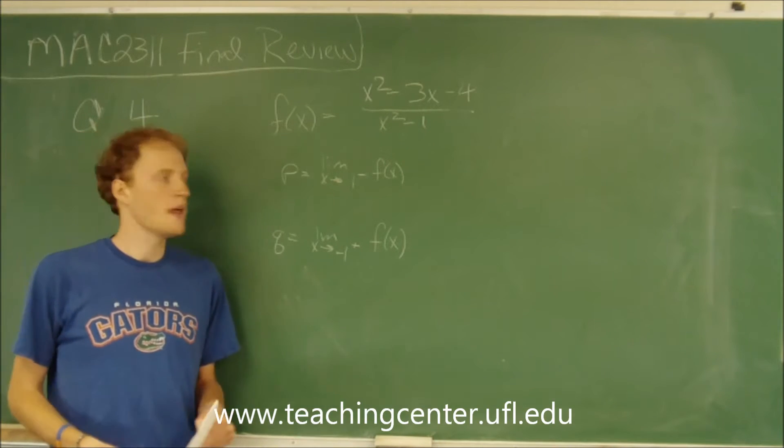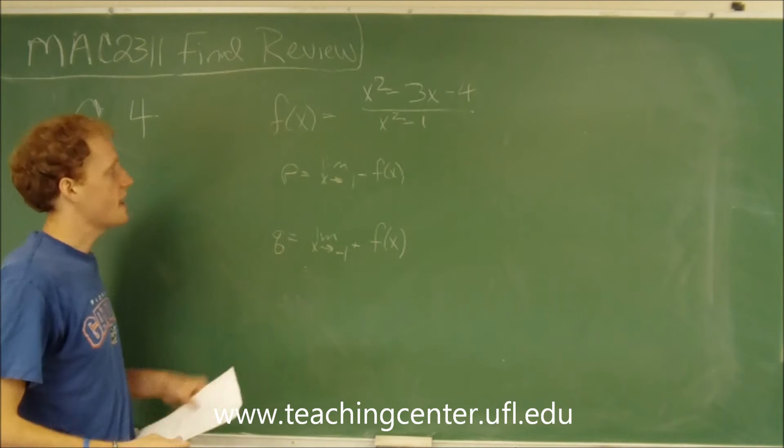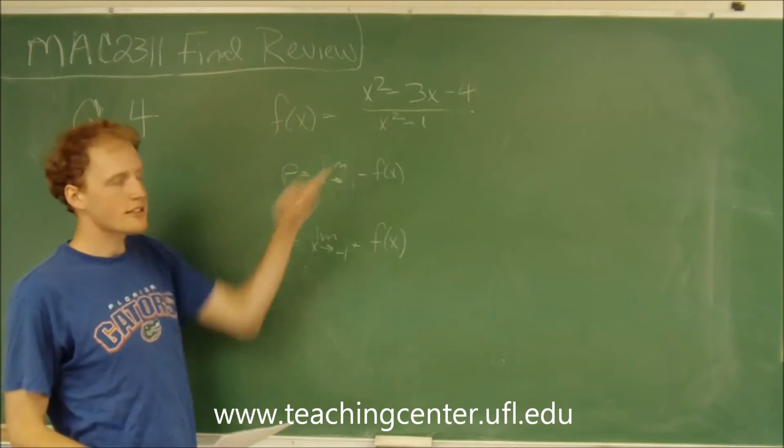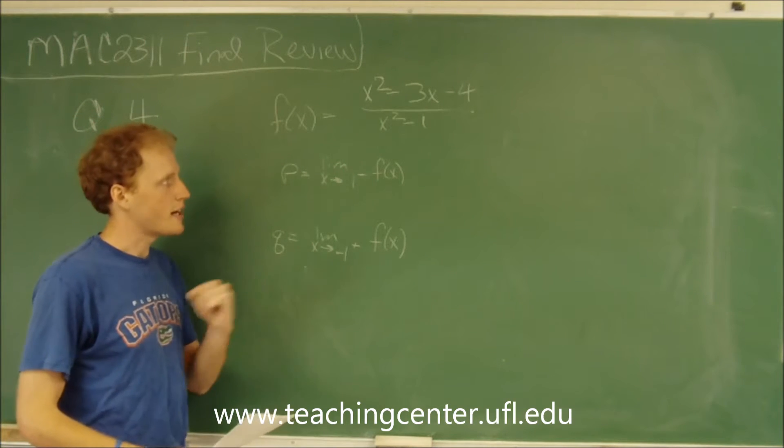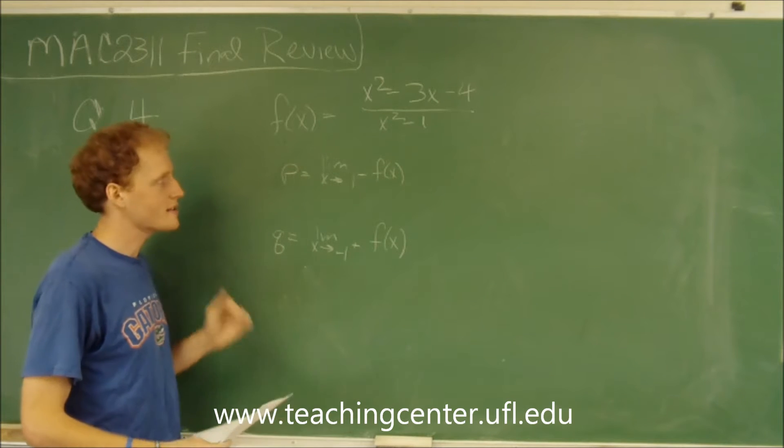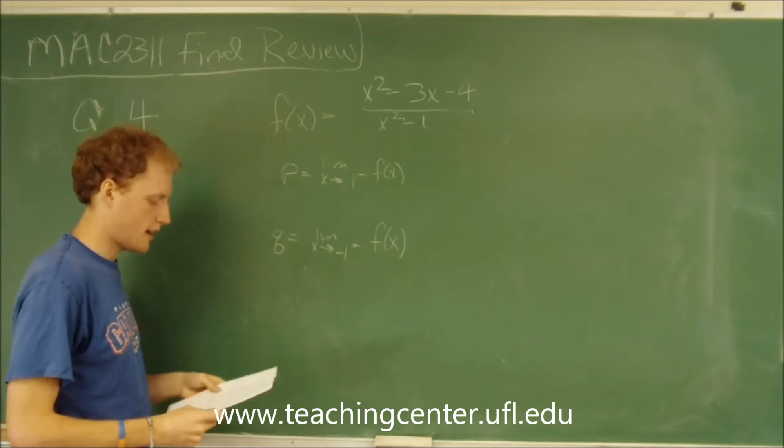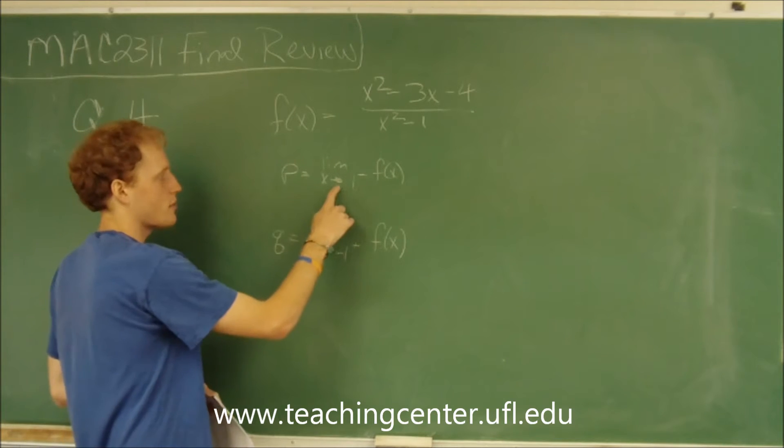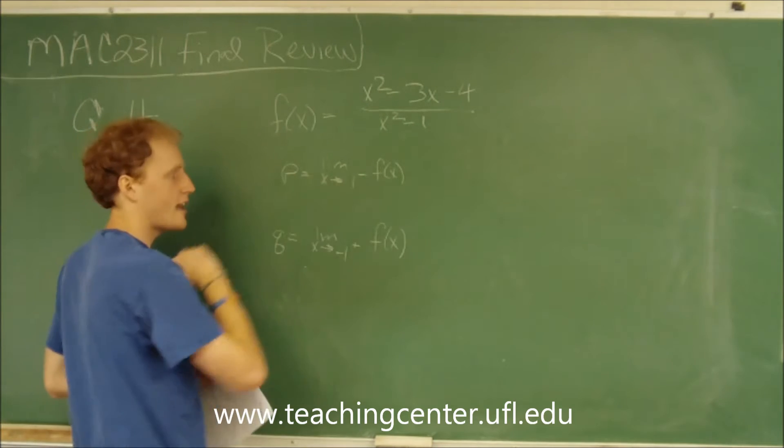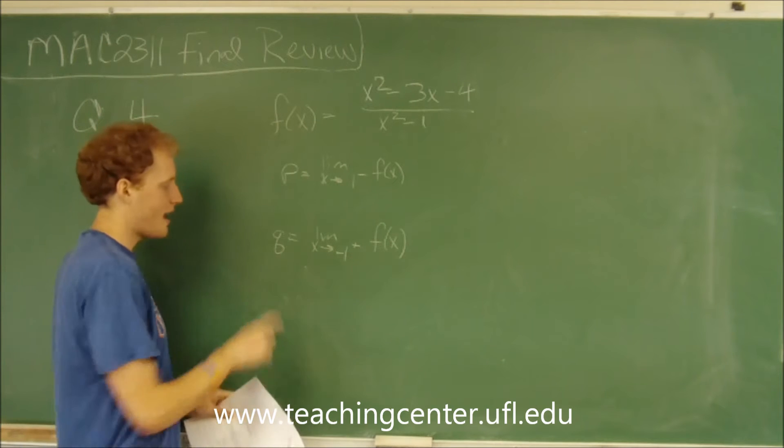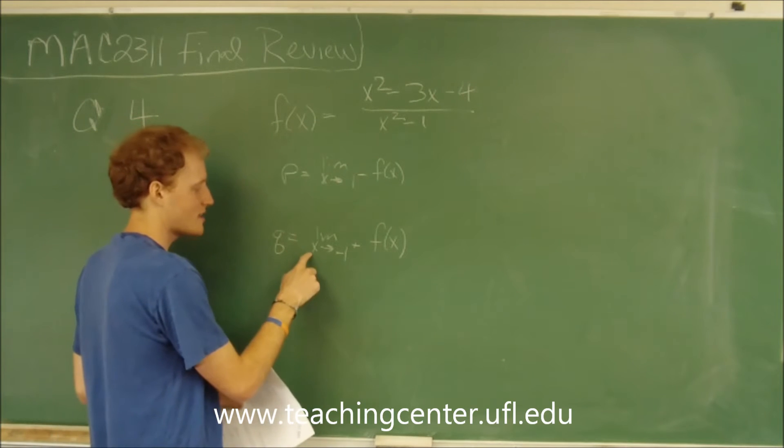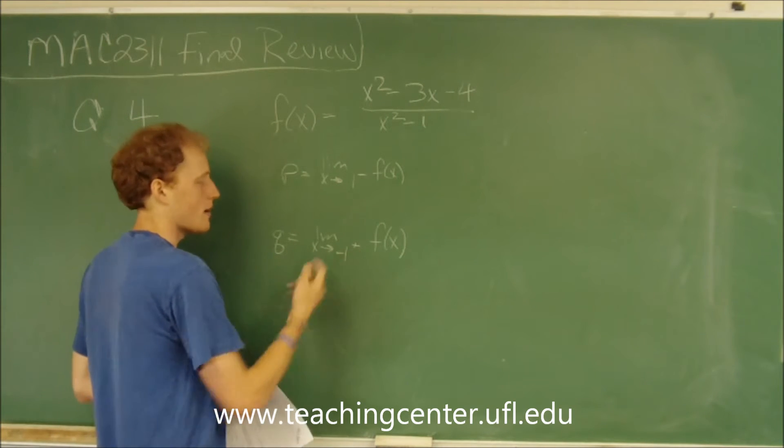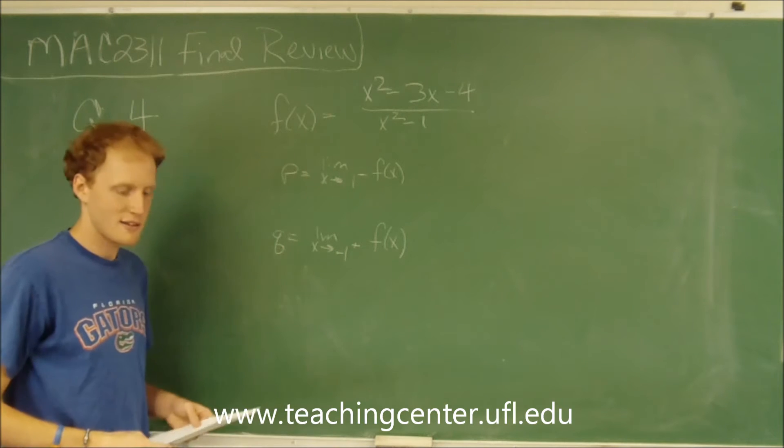This is problem number 4. If f(x) equals x squared minus 3x minus 4 all over x squared minus 1, and p equals the limit as x approaches 1 from the left of f(x), and q equals the limit as x approaches negative 1 from the right of f(x).